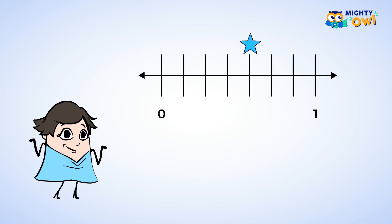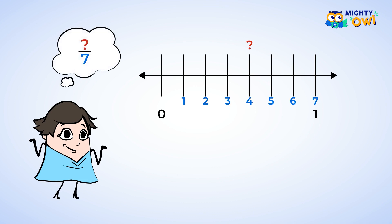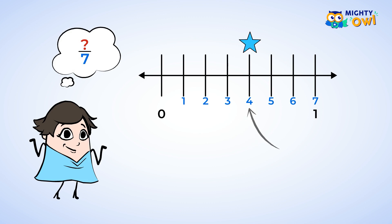Look — this number line already has a star on it. I wonder what fraction that star represents. Well, first we can look at how many parts the number line is split up into. There are 7 parts — that's our denominator. So let's count to see where the star is: 1, 2, 3, 4. The star is at 4 sevenths. Great job! That's another gold star for you.